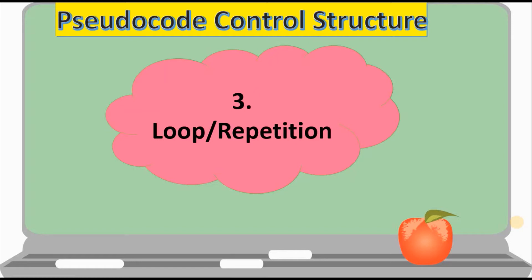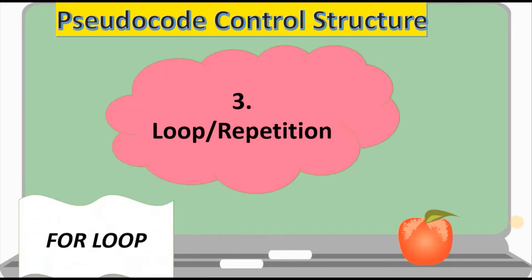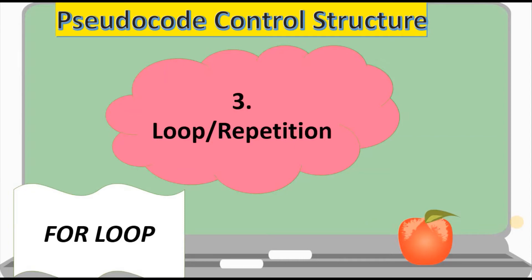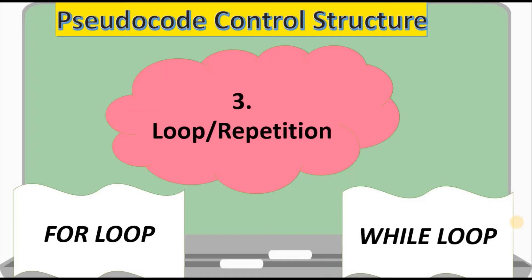For this tutorial we will be looking at one of two types of loops — the for loop — and the second type is the while loop. A loop, as the name indicates, is when a problem solution involves repeating a certain step a number of times.